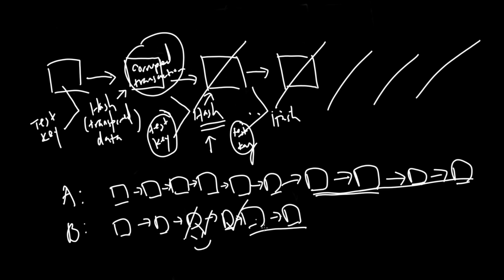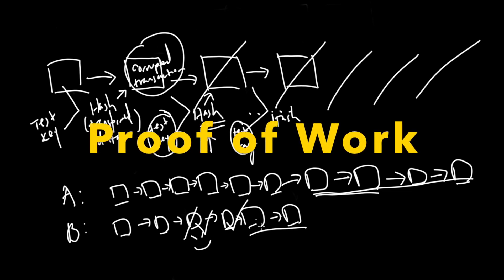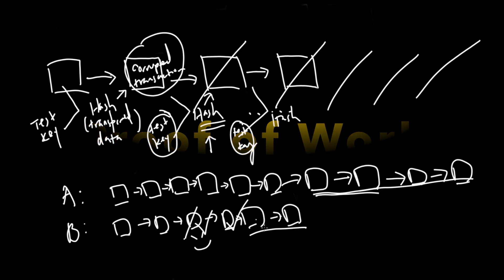This idea of requiring some computational work and requiring proof of that computational work is known as proof of work. Many blockchain systems, including Bitcoin, are based on this notion.